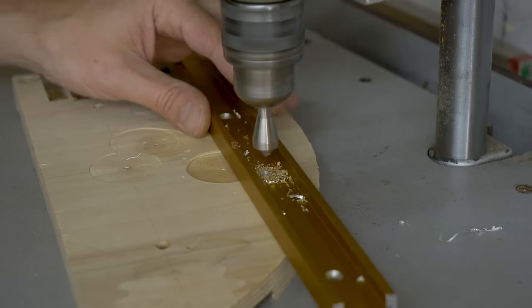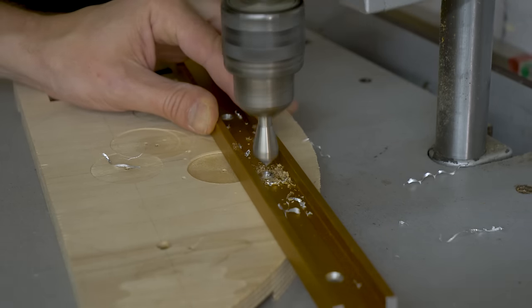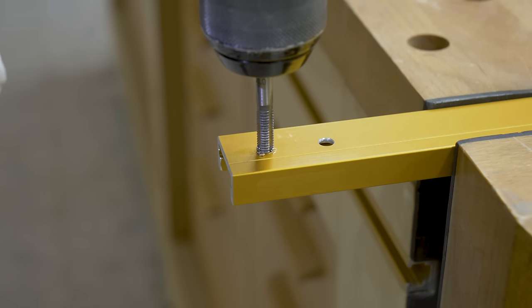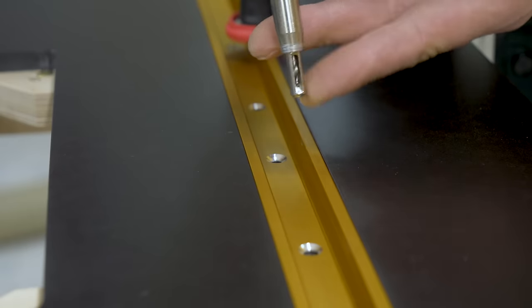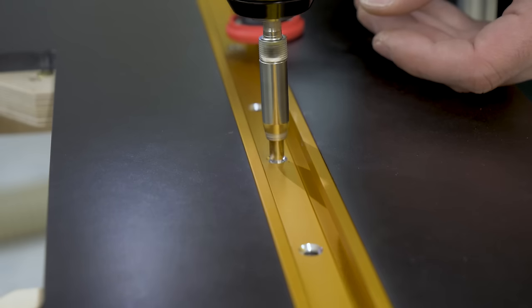I have to drill more holes to install the miter channel. I'm also going to place two M6 bolts on both ends of the channel. This last step is optional. I think these bolts will reinforce the router's top.